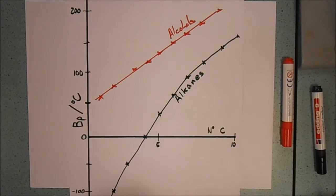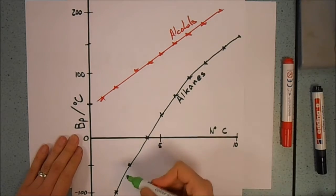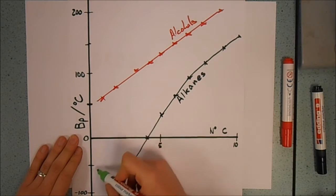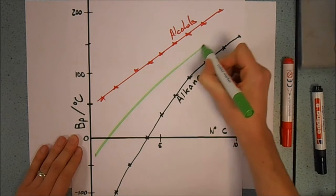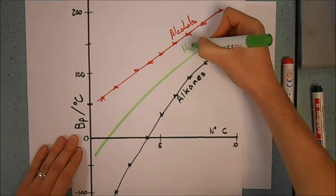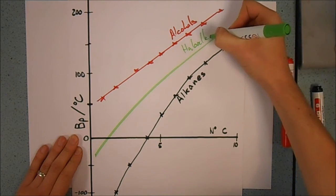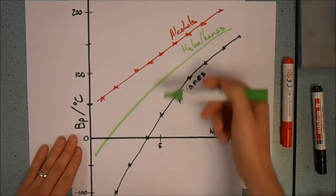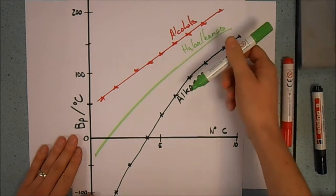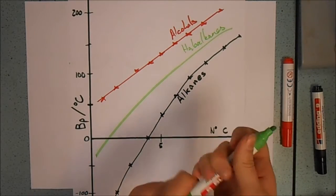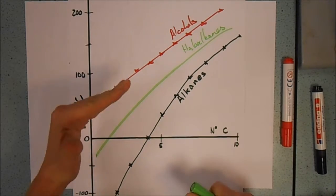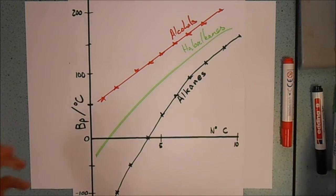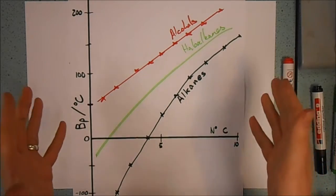But they're not actually London forces, and we know that because if we take haloalkanes, which have a greater relative mass than the alcohols, we find that the pattern is somewhere around here. So there's something else going on. Our alkanes and our haloalkanes may only have London forces between them, but the alcohols are stronger than you'd expect from a London force, so there must be something else.